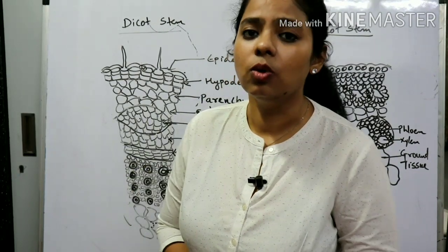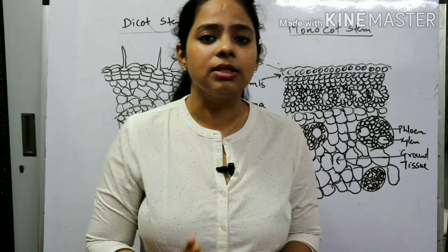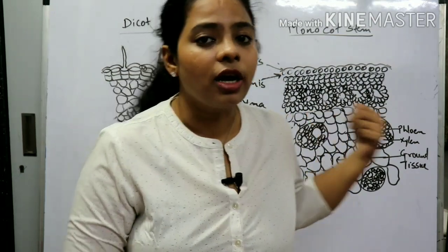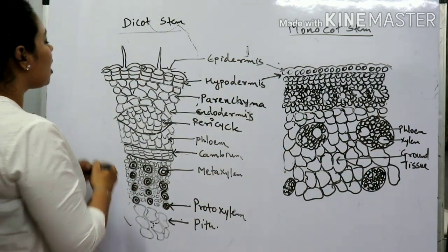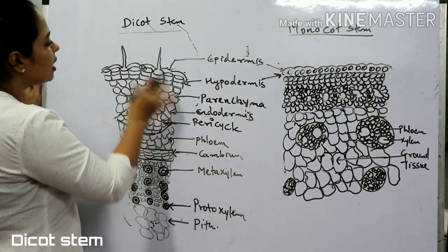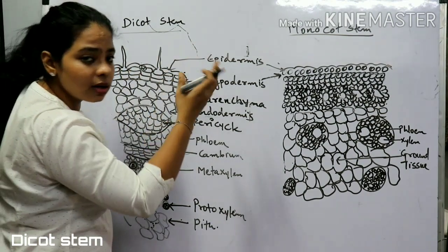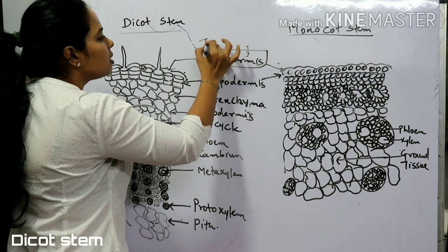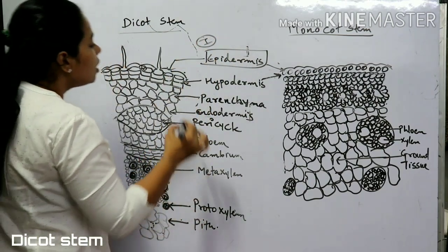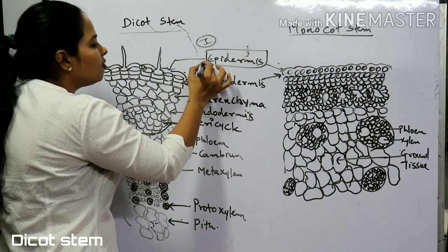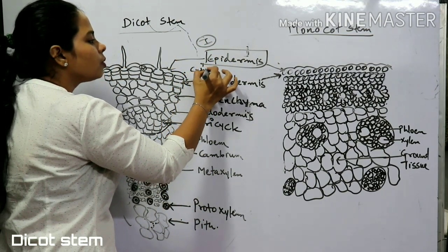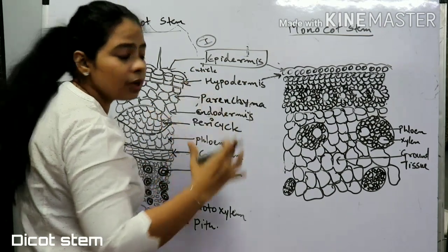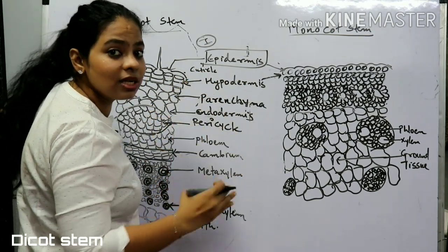In this video we are going to discuss the structure of the dicot and monocot stem. In dicots, the outermost layer is known as the epidermis. It is made up of a cuticle — a waxy layer on the epidermis which helps in reducing the loss of water by transpiration.